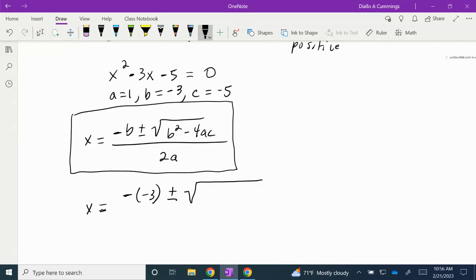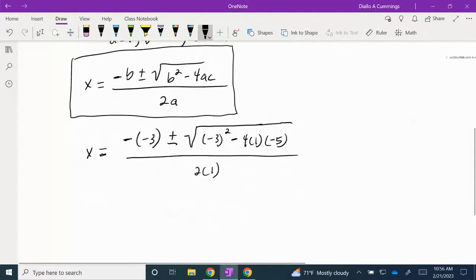The square root of b, which is (-3)², minus 4 times a, which is 1, times c, which is -5. And this is all divided by 2 times a. We're going to substitute a for 1.